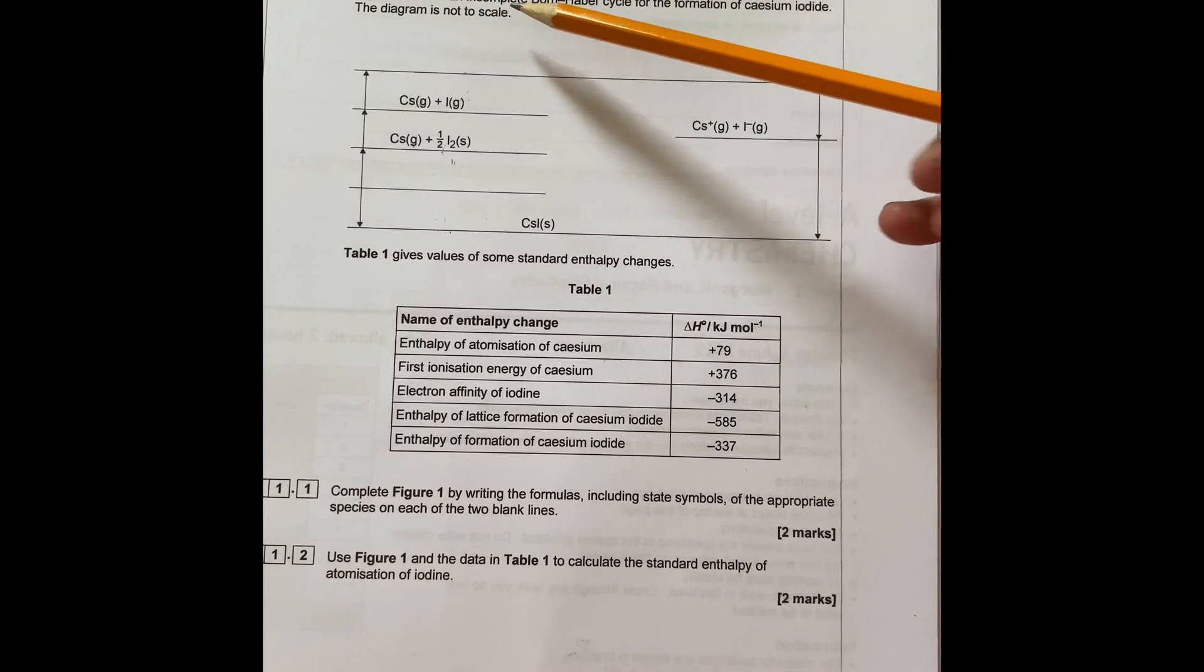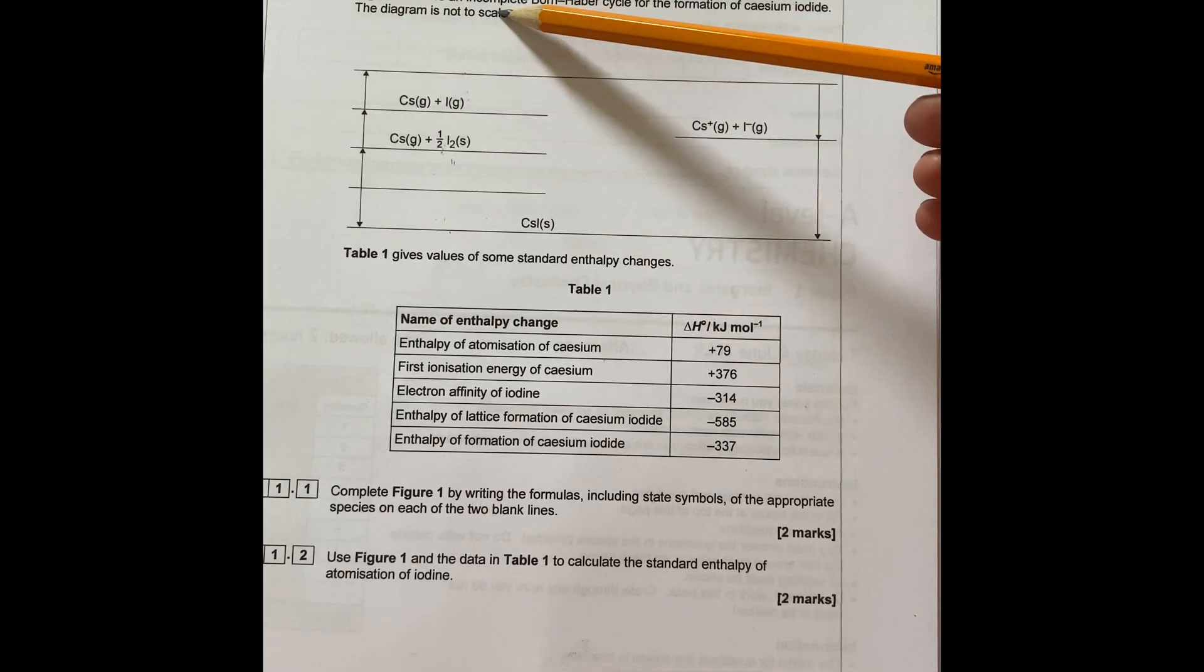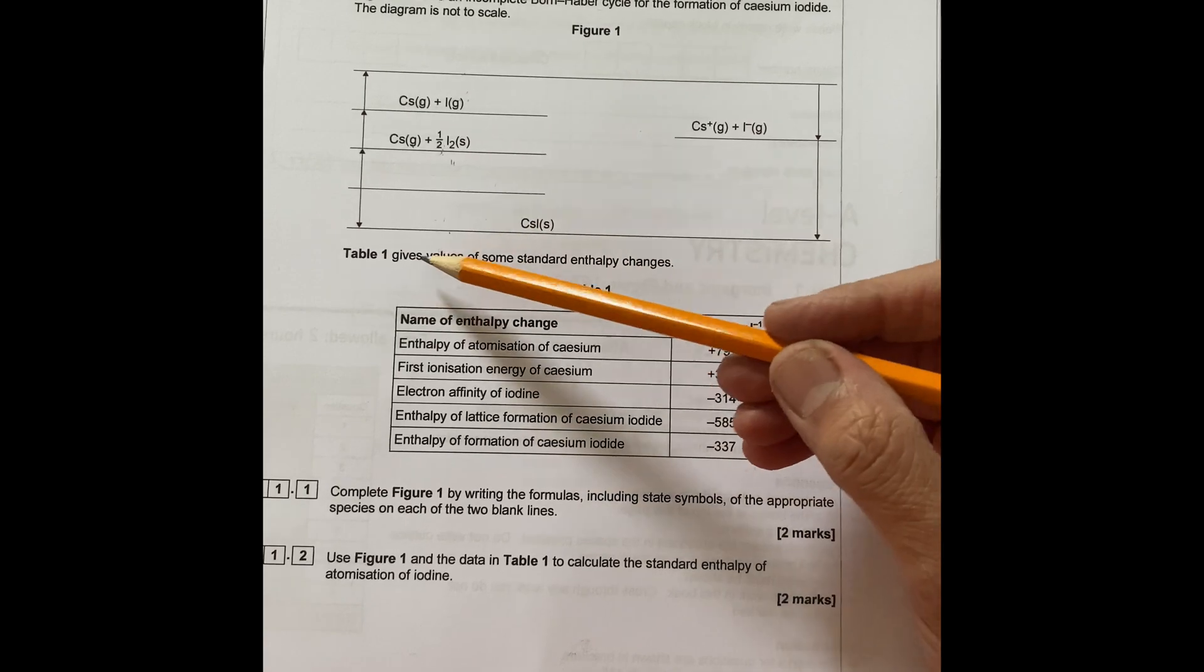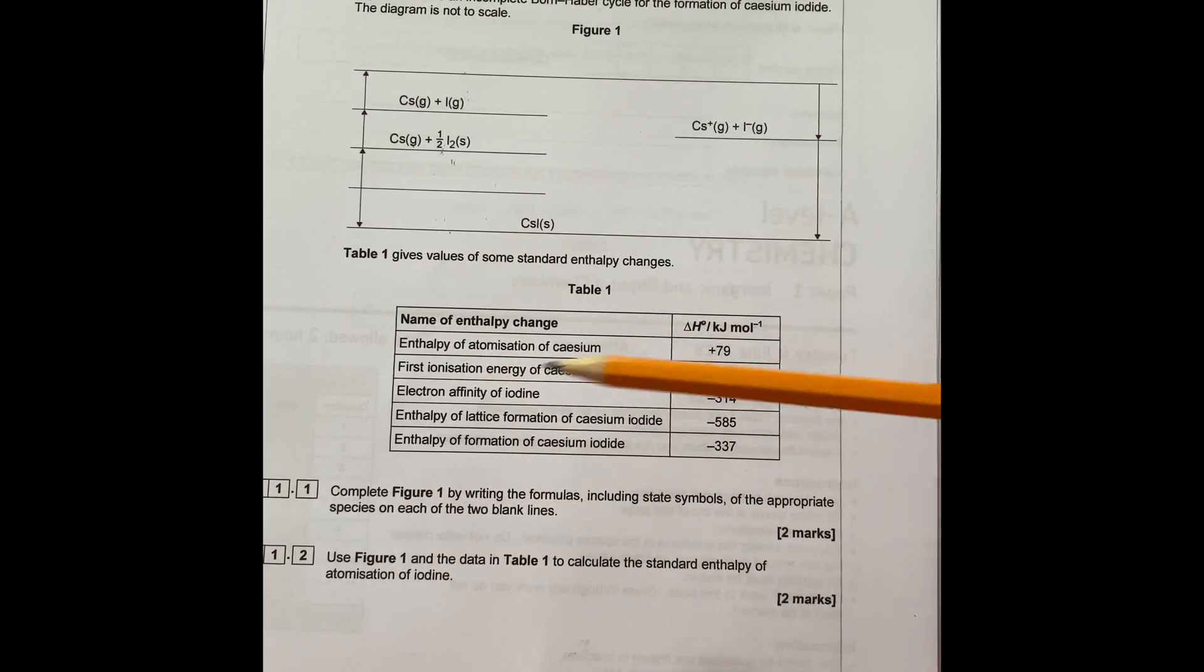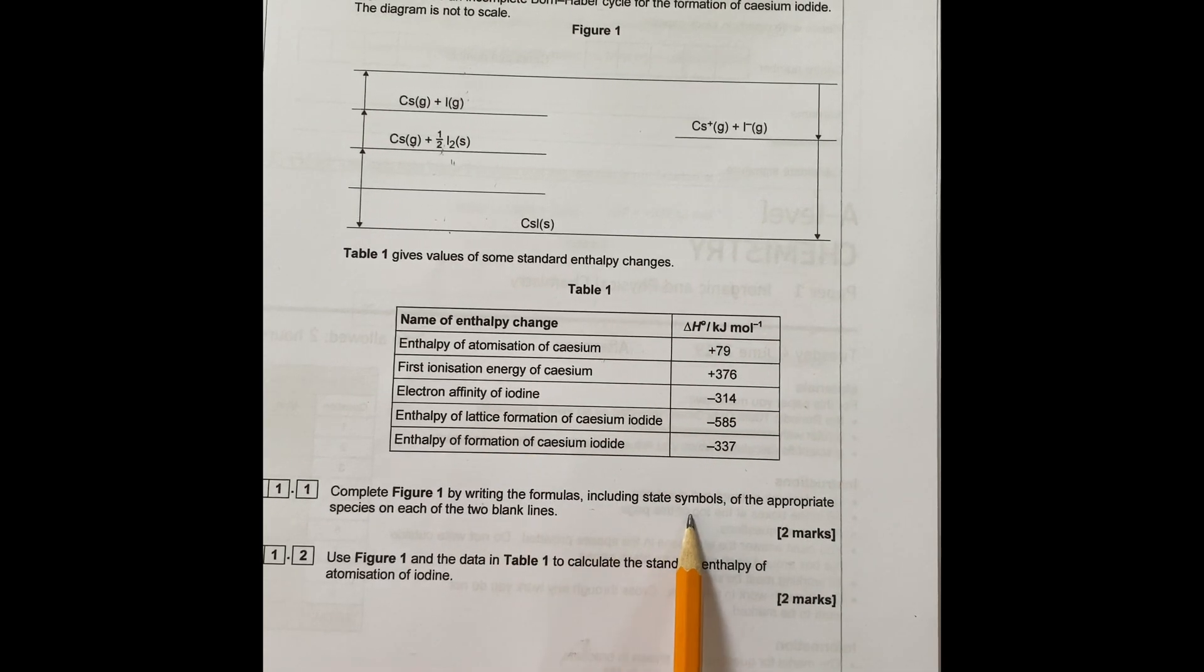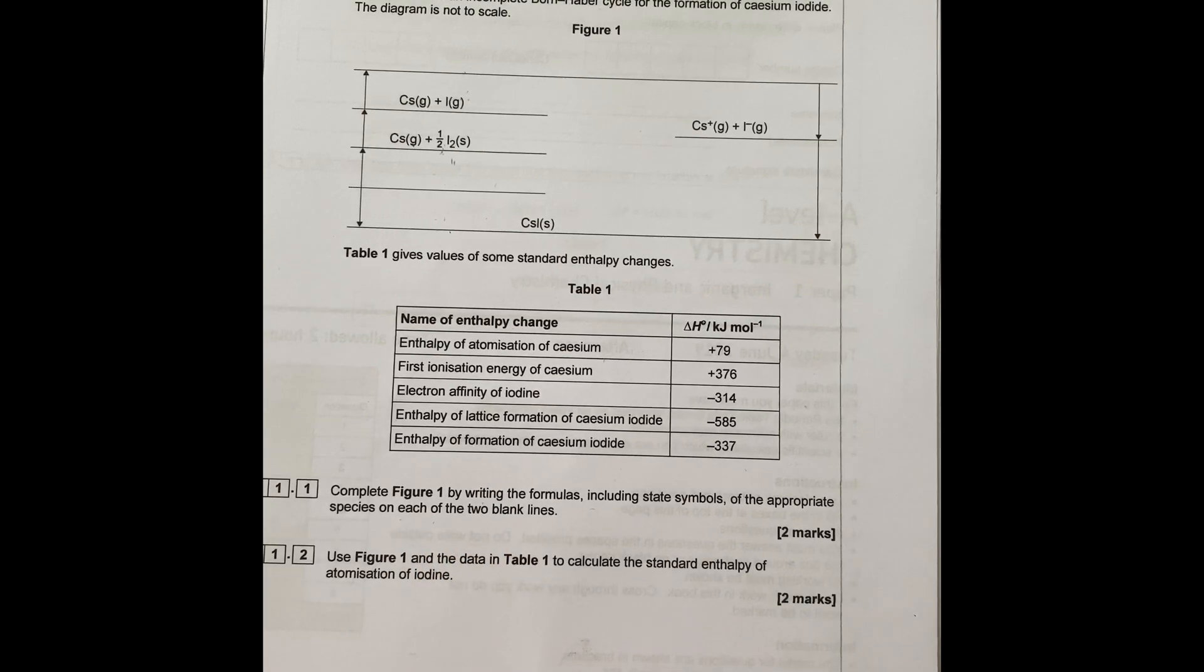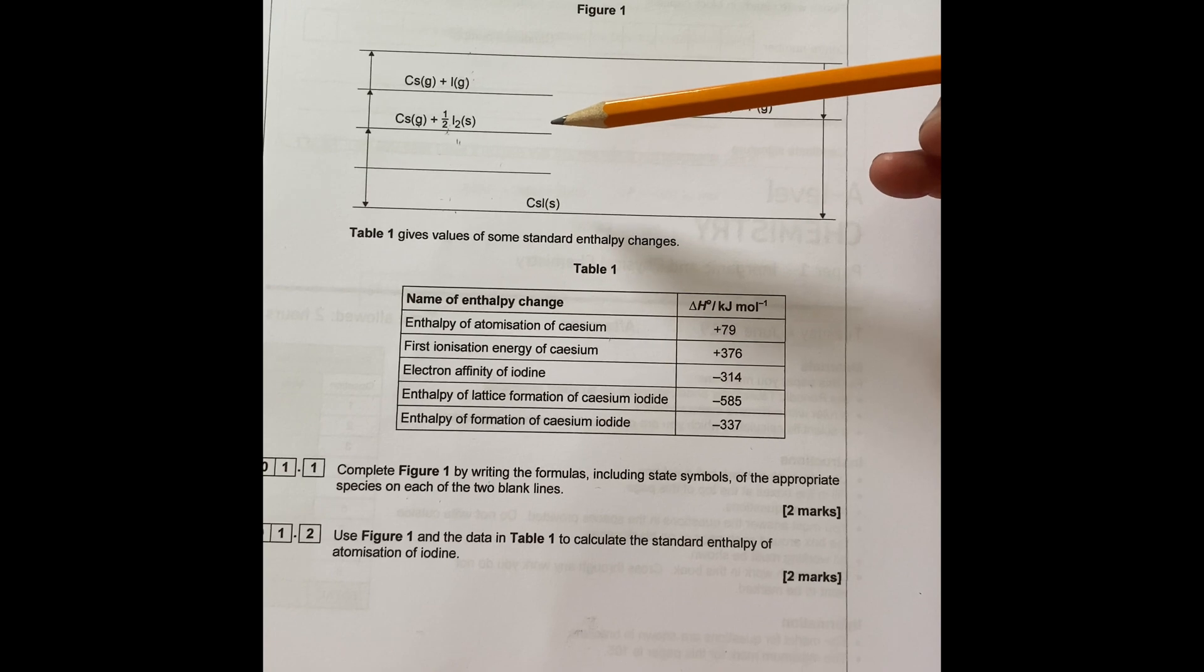So it says figure one shows an incomplete Born-Haber cycle for the formation of cesium iodide. The diagram is not to scale. Table one gives values of some standard enthalpy changes. Complete figure one by writing the formulas, including state symbols, of the appropriate species on each of the two blank lines. Now you have to know the definitions and equations for each definition.